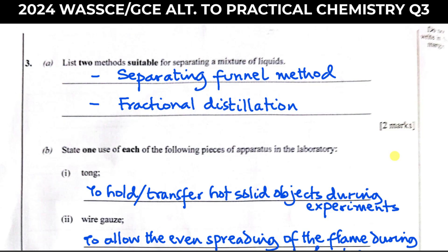They are asked to list two methods suitable for separating a mixture of liquids. They didn't specify — they just said a mixture of liquids. One is the separating funnel method, for separating immiscible liquids. The second one is fractional distillation, used for separating miscible liquids. You can also use distillation to separate a mixture of liquids if the variance in their boiling points is very wide, but always prefer fractional distillation because you can never be wrong with it.